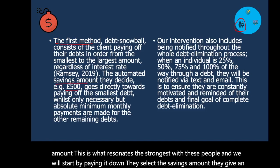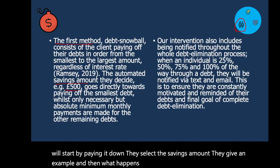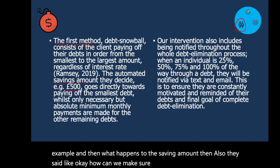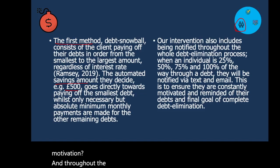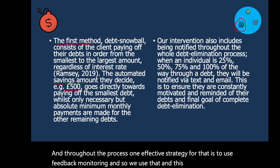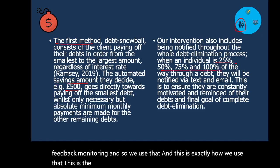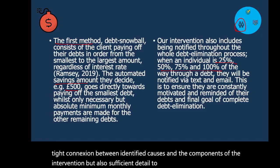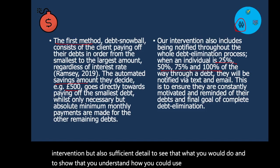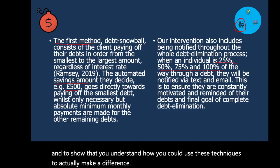They also ask how they can make sure participants sustain motivation throughout the process. One effective strategy for that is to use feedback monitoring — and they explain exactly how they use that and what numbers they will feed back to them. So there's a real tight connection between identified causes and the components of the intervention, but also sufficient detail to show that you understand how you could use these techniques to actually make a difference in these people.